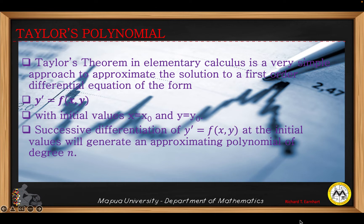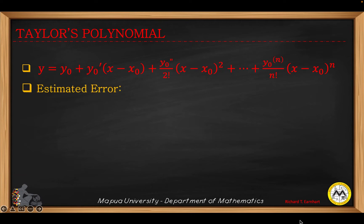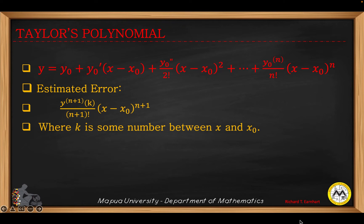Successive differentiation of the equation y prime equals f of x, y at the initial values will generate an approximating polynomial of degree n. This is the Taylor's polynomial, which is the same as the Taylor series in calculus. And the estimated error is given by a quantity where k can be any number between your x and the initial value x₀.